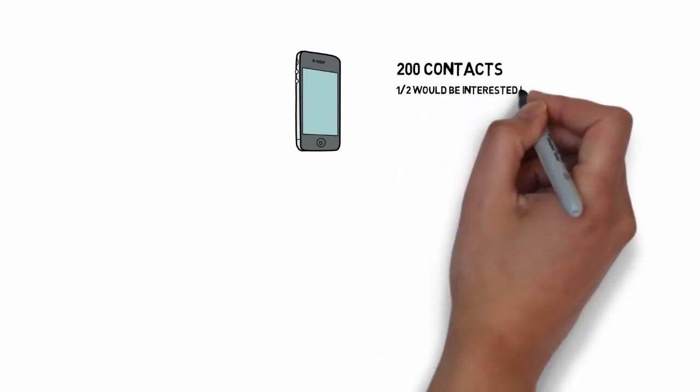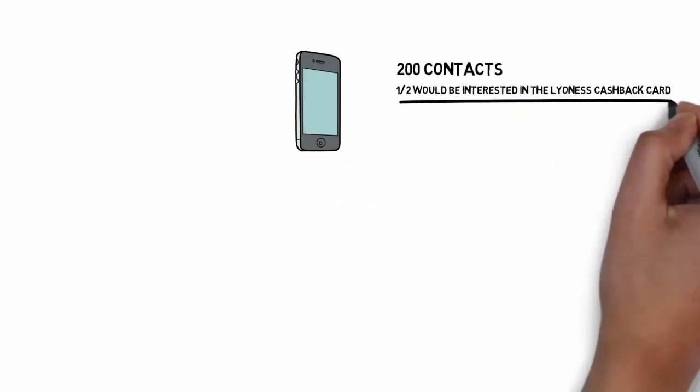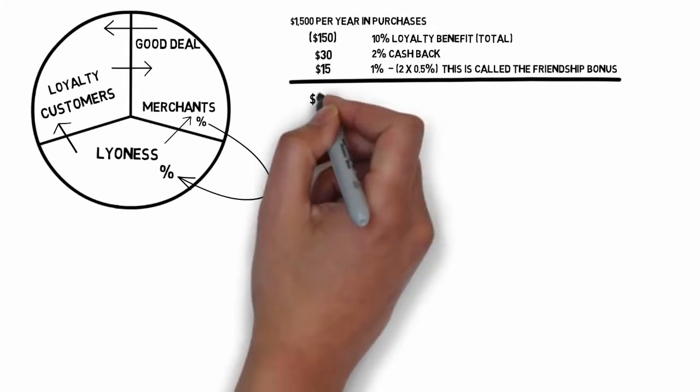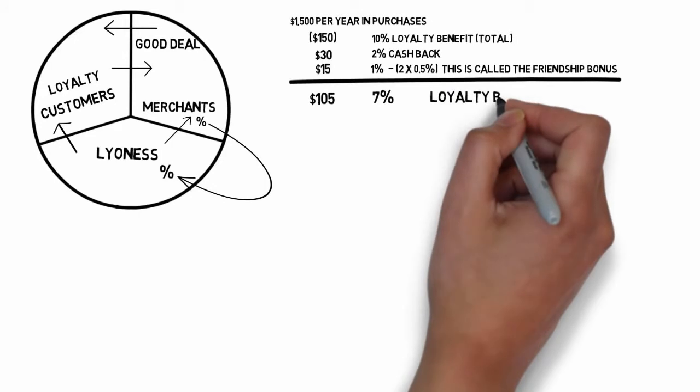So, Adam, do you own a mobile phone? How many contacts do you have in your mobile phone? Let's assume you have 200. How many of these contacts do you think would be interested in a Lyoness cashback card to save money? At least half? Okay. Half of 200 is 100. Remember this number. So, if we draw a line under these numbers, we have $150, which is the total loyalty benefit, and 10%, which is the percentage of the purchase awarded as the loyalty benefit. From $150, we subtract 2% of the purchase for the cashback amount, or $30. We subtract 1% of the purchase for advertising with the friendship bonuses, which is also $15. This leaves us with $105 remaining, or 7% of the total purchase. Is that correct?